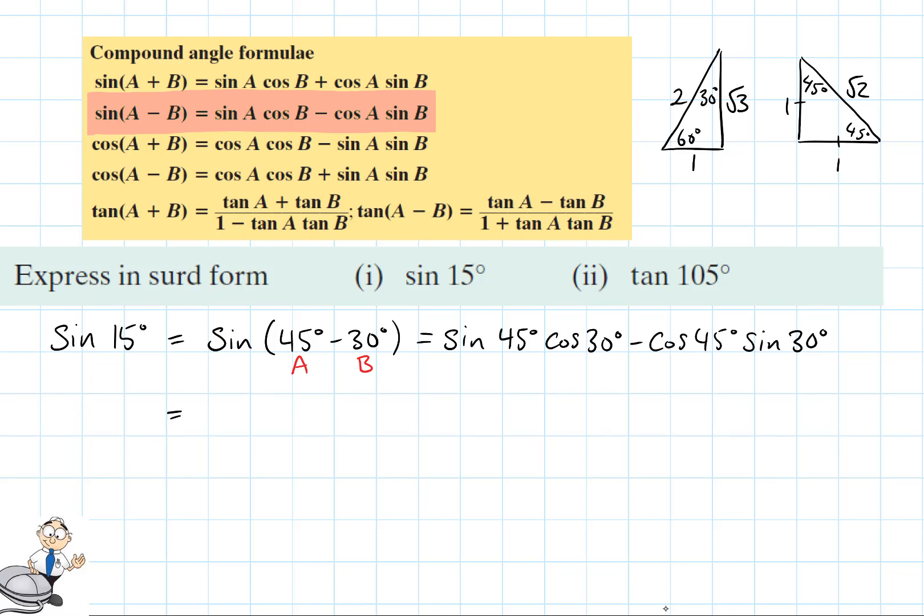Now we can evaluate each of these. Looking at the triangle above we see sine 45 is 1 over root 2, cos 30 degrees is root 3 over 2, take away cos 45 degrees which is 1 over root 2, and multiply by sine 30 degrees which is 1 over 2.